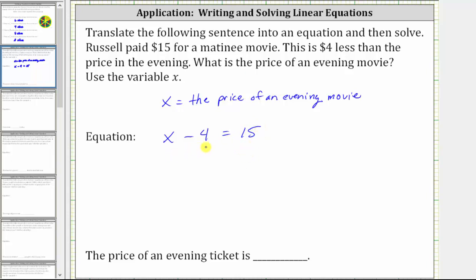Now we want to solve the equation for x to determine the price of the evening movie. In order to solve the equation, we need to isolate x on one side of the equation, which means we need to undo the subtraction or undo the minus four by adding four to both sides of the equation.